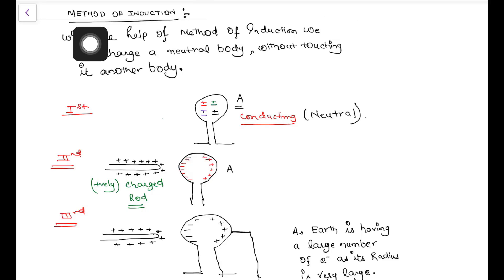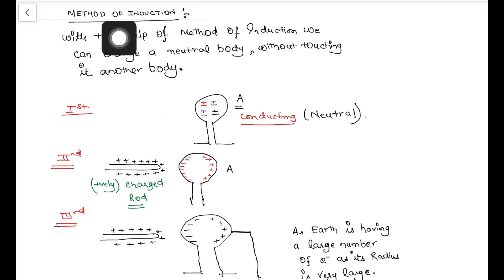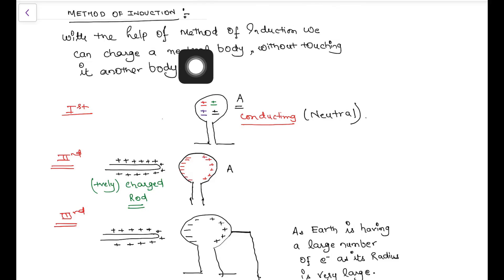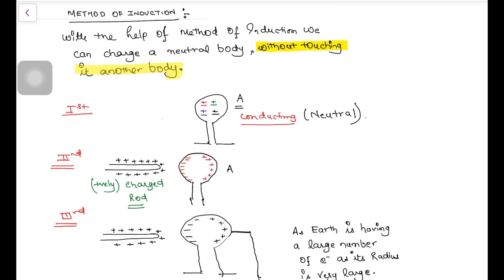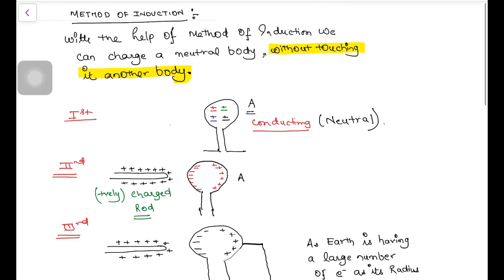How can we charge a body with the help of the method of induction? We can charge a neutral body without touching it. The important point is: without touching another body, we can charge a neutral body. In the previous methods, like the method of rubbing or friction, or the method of conduction, we need to make contact between the two bodies — then and only then can we charge a neutral body.